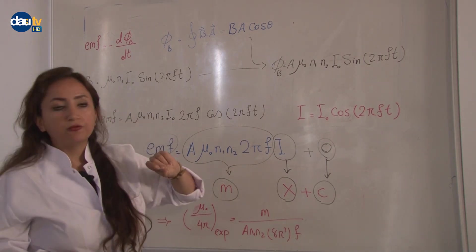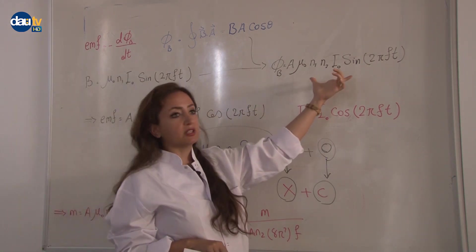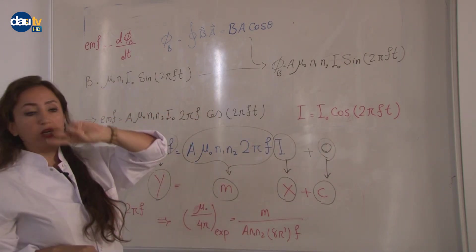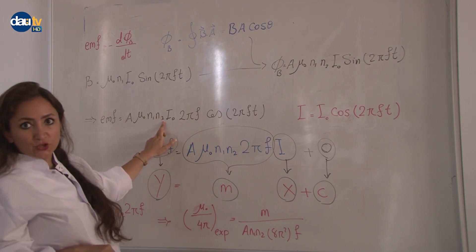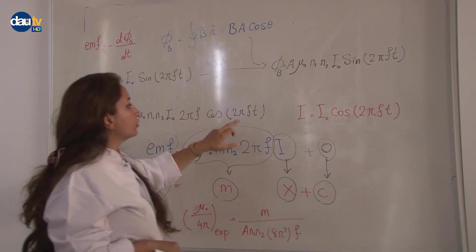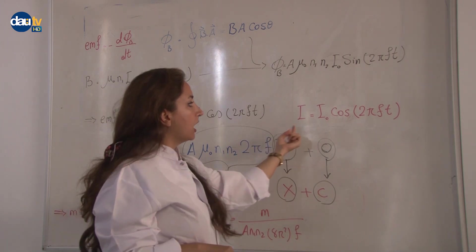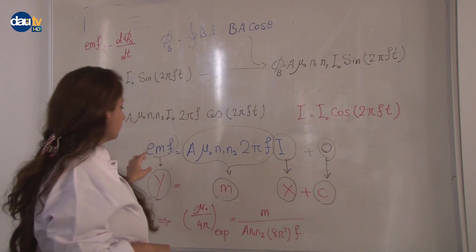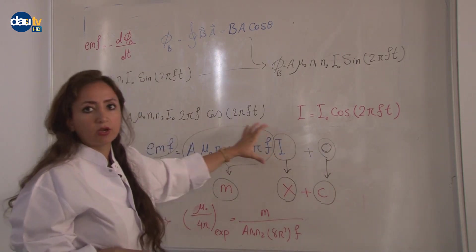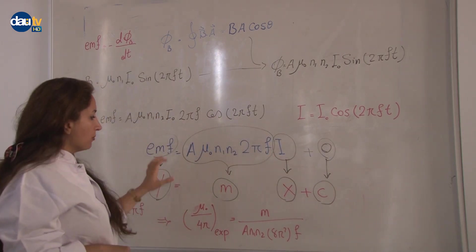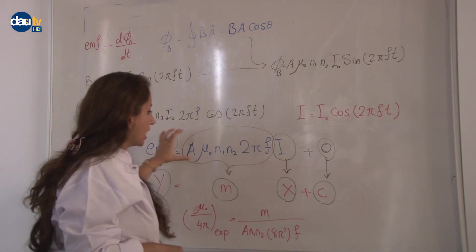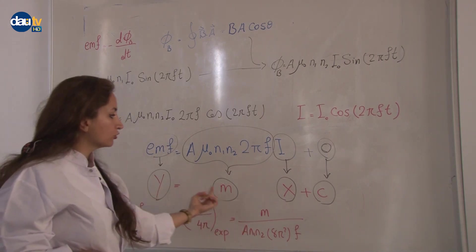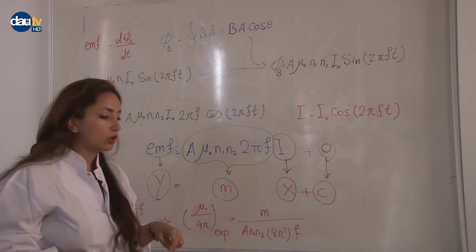For defining the electromotive force, we have to take derivative of this equation to write it in this form. EMF for two solenoids is N1 N2 I zero two pi f cosine two pi f t. If we call I zero cosine two pi f t as I, then we can simplify our equation in this form.